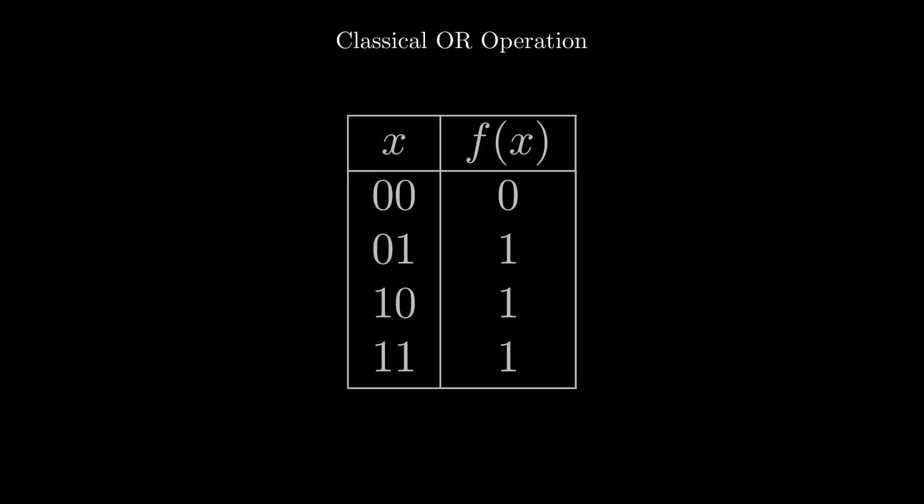The OR gate acts on two bits as well. If either of the bits is a 1 or both are 1, then it returns 1, otherwise it returns 0.